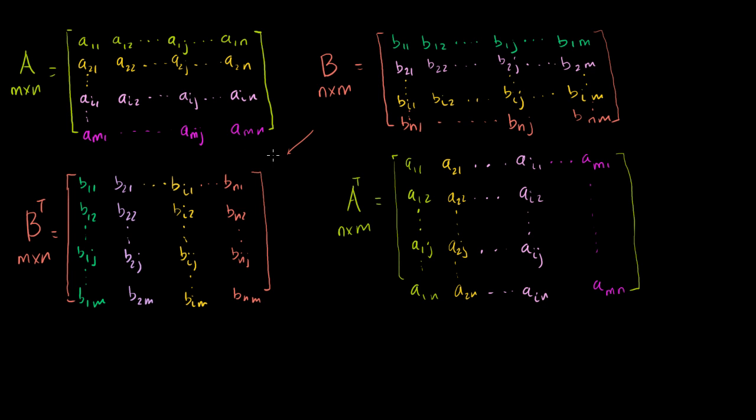And the same thing I did for A. Its transpose is right there. A was m by n. The transpose is n by m. And each of these rows become each of these columns. Now fair enough.